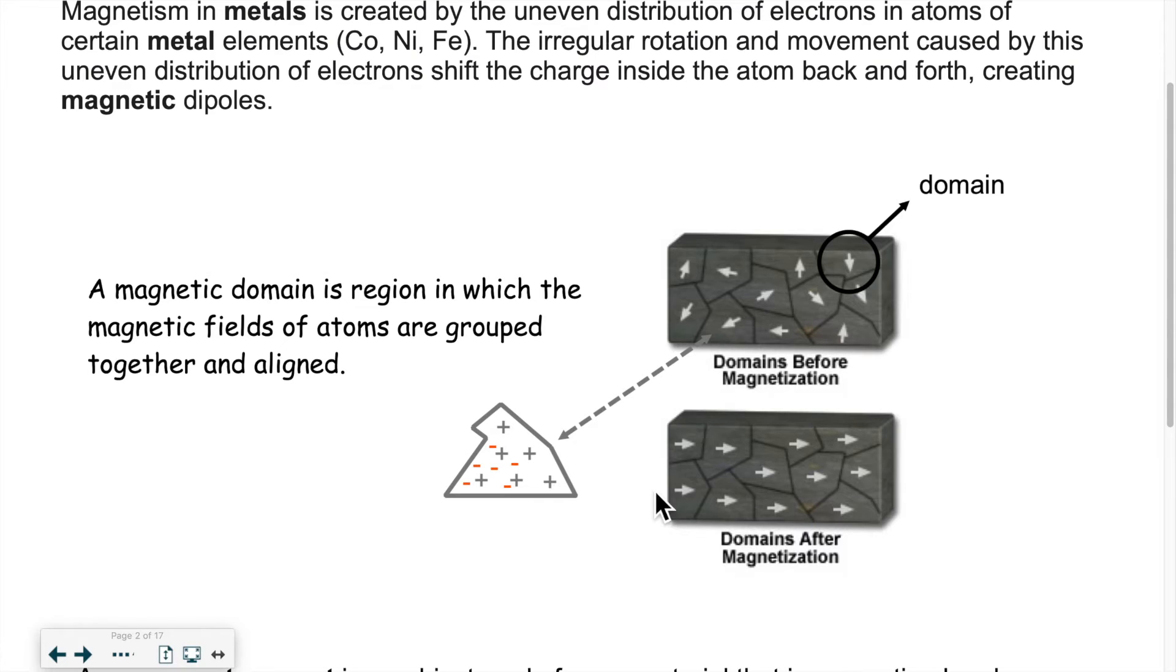If it so happens that these domains are all aligned the same way, so all the electrons are bunched on the same end of the various domains, then you're going to have magnetization. You're going to have either a permanent magnet or a substance that can be temporarily magnetized. So this is how magnets work.